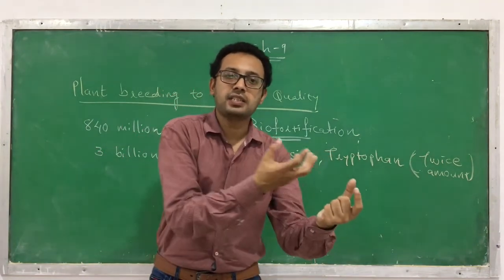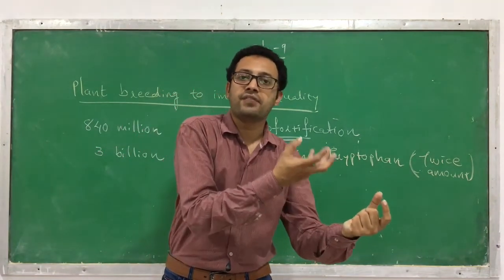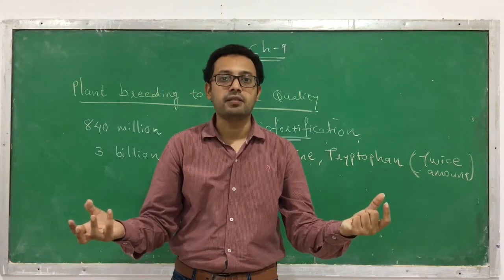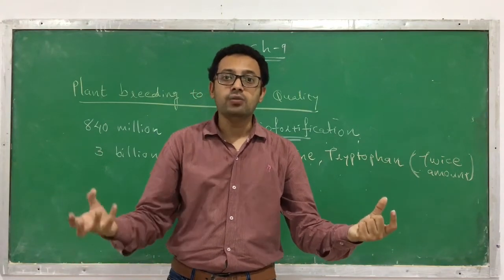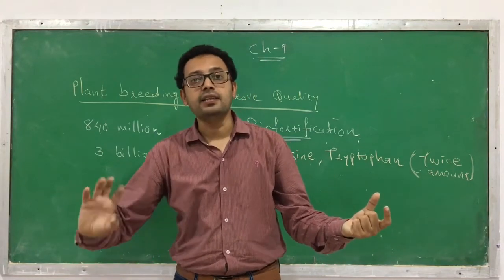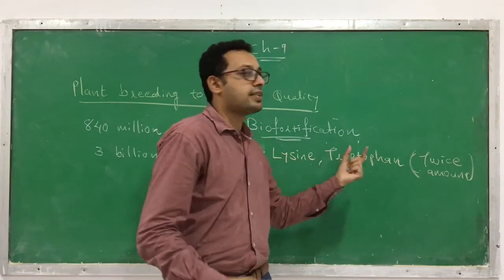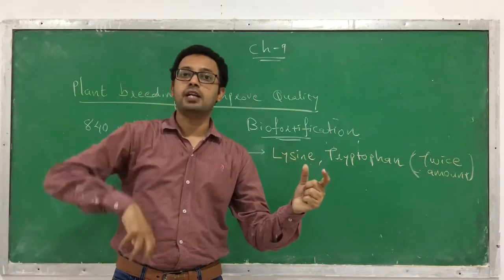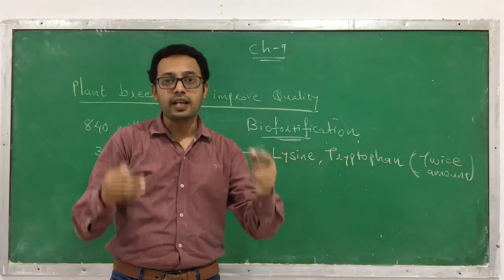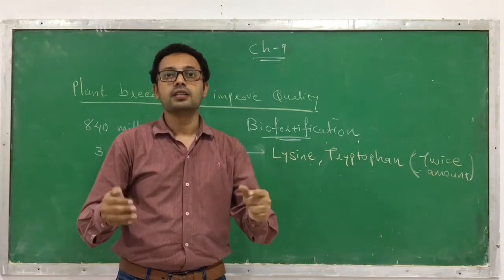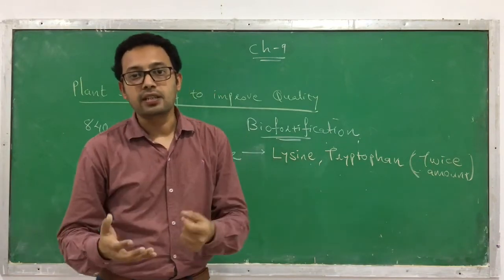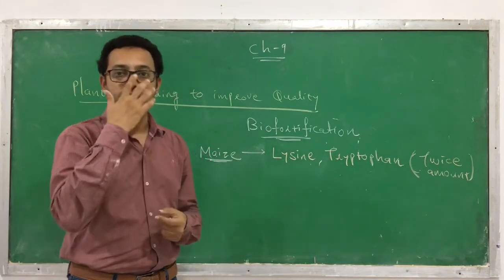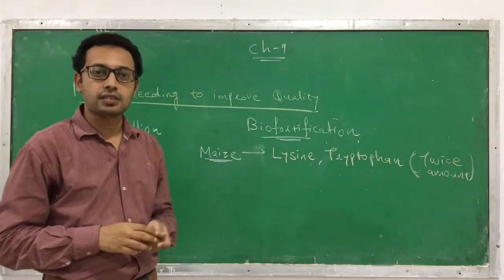Initially when a person was consuming 50 grams of maize, they received a certain amount of lysine and tryptophan. Now, the maize contains double the amount of lysine and tryptophan, so even consuming the same 50 grams gives the person double the amount of these amino acids. Hence their protein deficiency can be fulfilled, because these amino acids are useful in protein synthesis in our body.